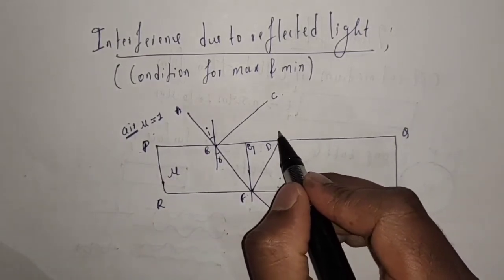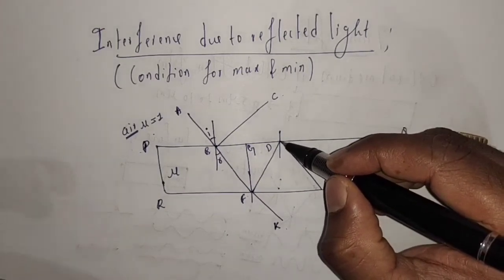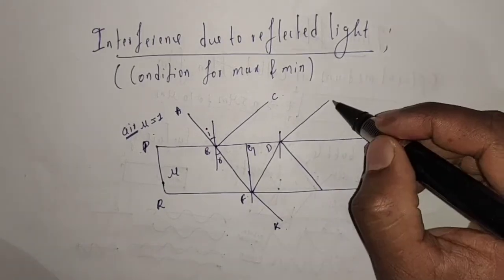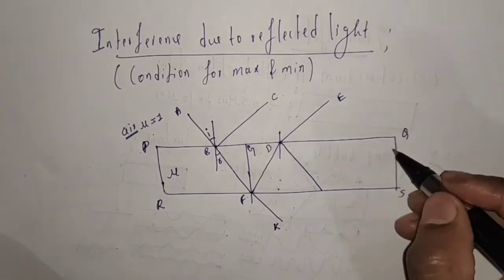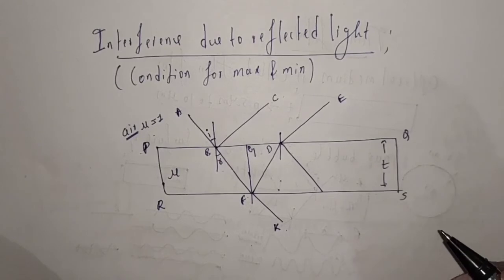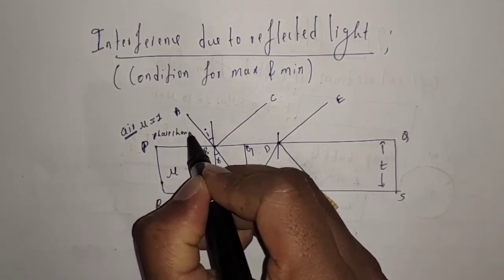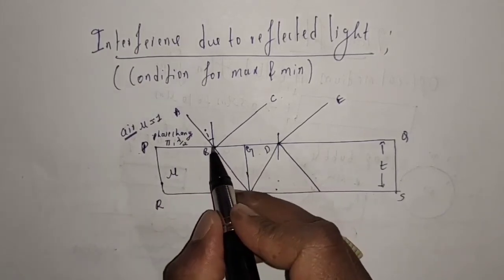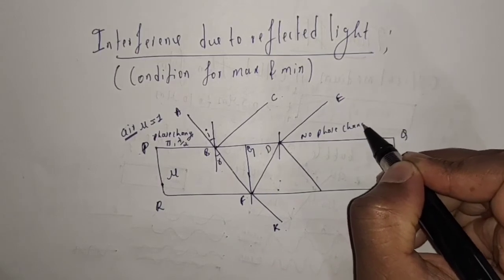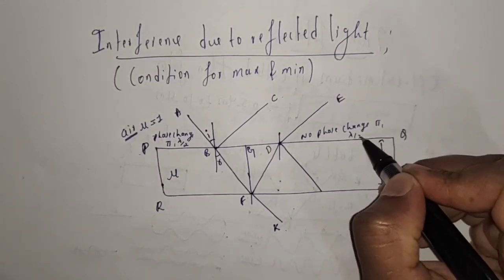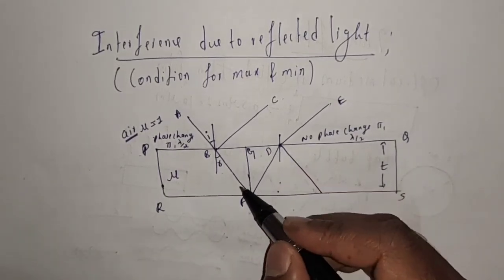Let us denote this point by G. When FD is incident on the top face of the thin film, again some part of light gets reflected and some part gets transmitted. The transmitted wave is DE, and the film is having thickness T. We are going to observe a phase change of pi, or path difference of lambda by 2, at the top surface, and no phase change for the transmitted wave.